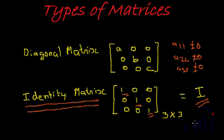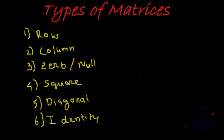To summarize, we learned six different types of matrices: a row matrix with one row and multiple columns; a column matrix with one column and multiple rows; a zero or null matrix where every element is zero; a square matrix where the number of rows and columns are equal; a diagonal matrix — a special case of square matrix where all off-diagonal elements are zero; and an identity matrix — a special case of diagonal matrix where all diagonal elements are one.